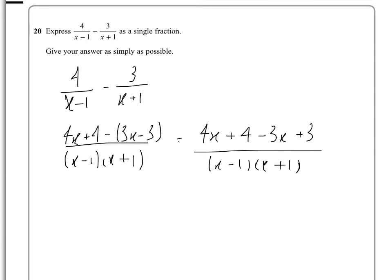The top bit then simplifies to 4x minus 3x is x, and 4 plus 3 is 7.